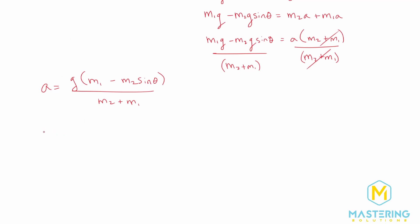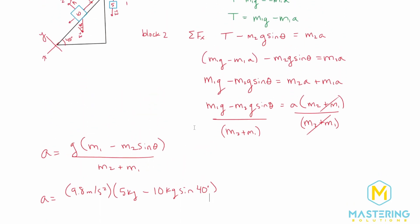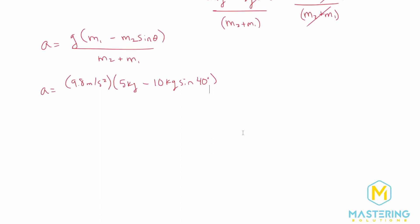Now plug in the numbers. Acceleration equals 9.8 m/s² times (m1 minus m2·sin(θ)), divided by (m2 plus m1). Here m1 is 5 kg, m2 is 10 kg, and θ is 40 degrees. So we have 9.8 times (5 minus 10·sin(40°)), all divided by (5 plus 10), which is 15.